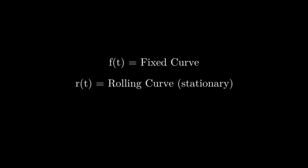Now, how would we go about deriving a formula to generate all possible roulettes? Let f be the complex parametric function representing our fixed curve, and let r be the complex parametric function representing the curve we wish to roll. What this means is that for a given value of t, f will output some point in the complex plane on the fixed curve, and r will output some point in the complex plane on the stationary rolling curve.